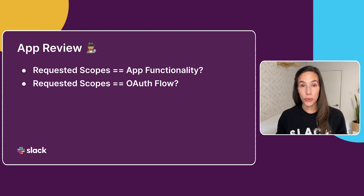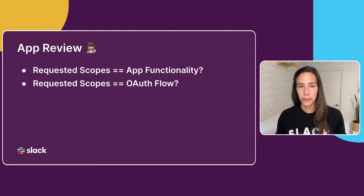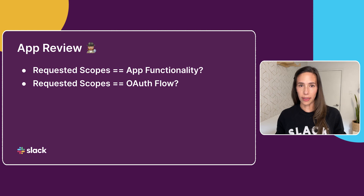For context, when we're reviewing apps, we compare the requested scopes directly with the functionality of your app. If we notice a scope does not pair up with what your app is meant to do, we will flag that. We also compare the scopes that are requested to the scopes that appear during the OAuth submission flow. If there are any discrepancies there, we will also flag that.